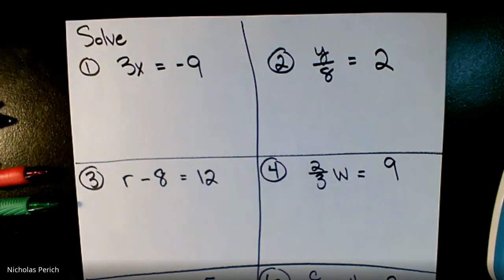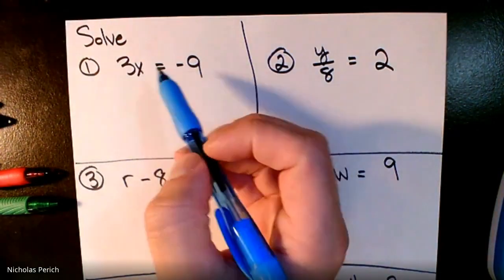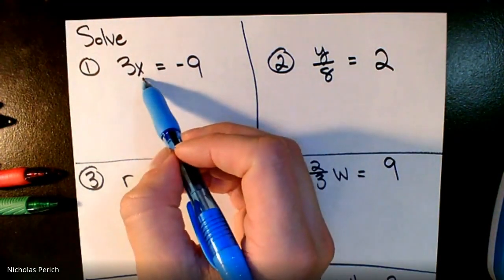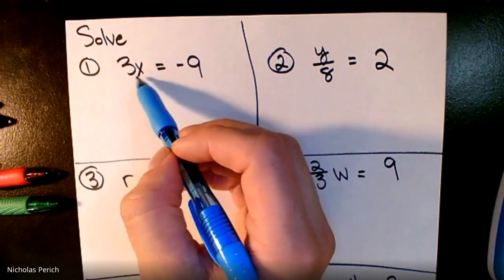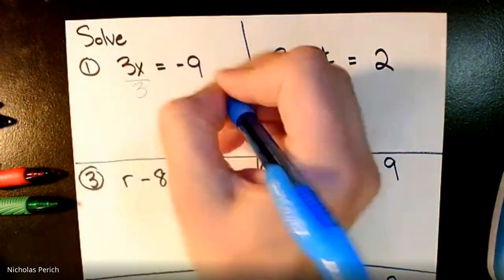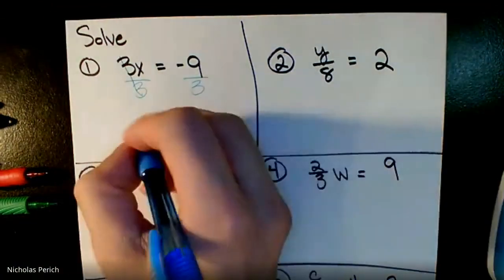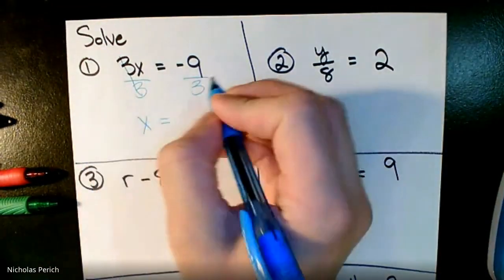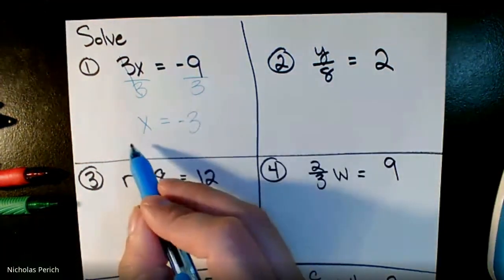Is x all by itself? Nope — I have three multiplied to x. How do I get rid of a three if it's being multiplied to x? The opposite: divide everything by three. Divide everything by three, cross that out. x equals negative nine divided by positive three, which is negative three. Is x all by itself now? Done.